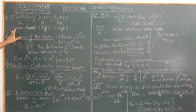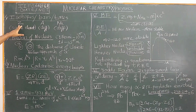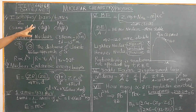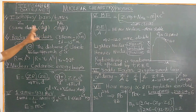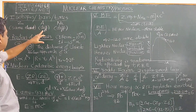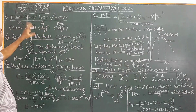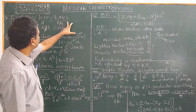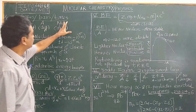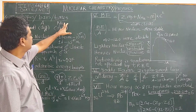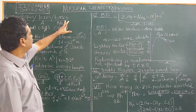Isotopes have the same atomic number but different mass number. They belong to the same element — for example, hydrogen, deuterium, tritium, etc. Whereas isobars have the same mass number but different atomic number. Isotones have the same neutron number but are different elements.